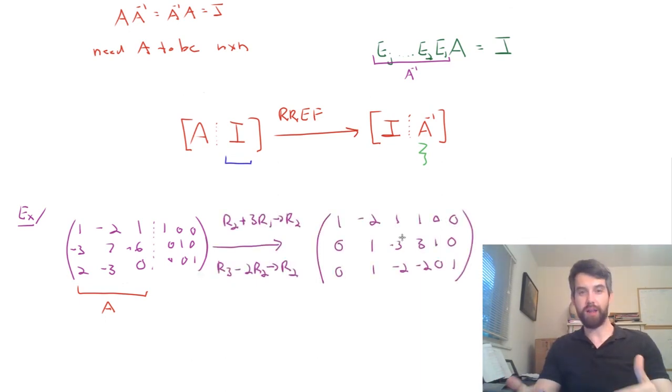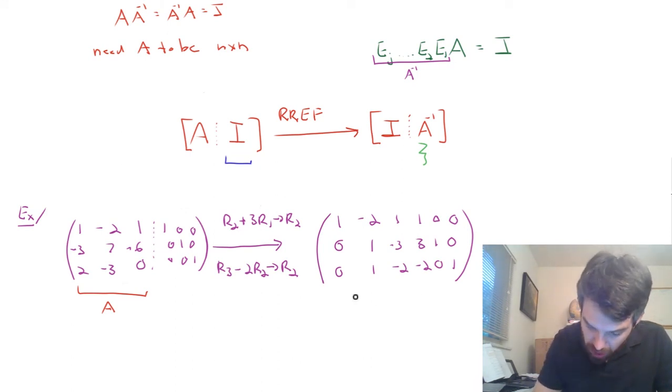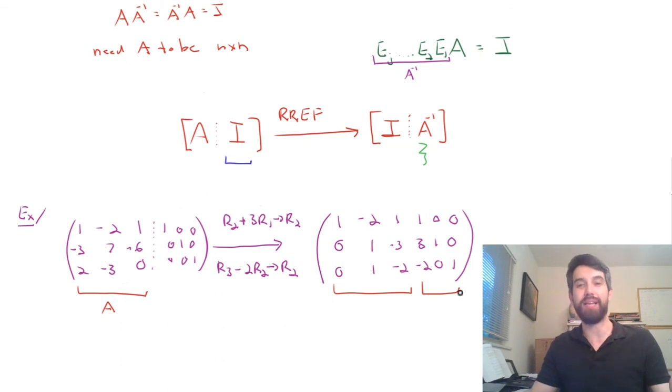Alright, so I've done a couple elementary row operations in this step, and what you might notice is that my A part, the portion on the left here, it's not the identity matrix yet, but it's getting a little bit cleaner. And the stuff on the right hand side, which started as identity, it's getting a little bit messier. So, let's just keep on going and see what we get.